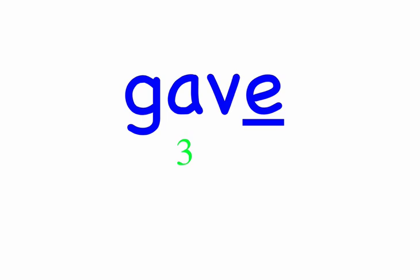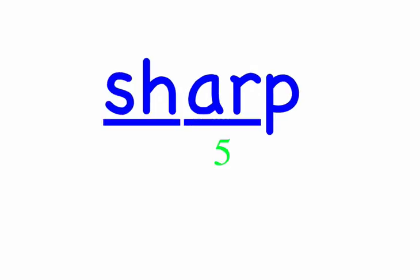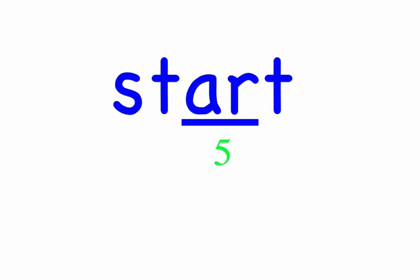A sharp. Sharp — three sounds: SH, R, P. Sharp. Start — four sounds: S, T, R, T. Start. To the meek. Meek — three sounds: M, E, K. Meek.